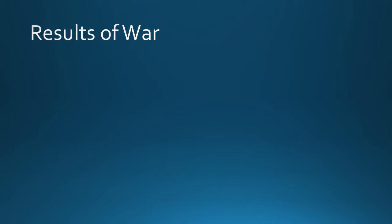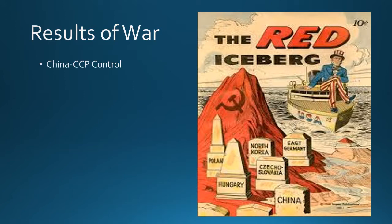Now let's talk about the results of the war. The most obvious result is that China is now under communist control — a big deal. China has become a communist society, which shifts the balance of the Cold War toward the Soviet Union, creating fear in the United States as depicted in a U.S. comic. Mao will institute land reform and socialist reforms, representing a major shift.